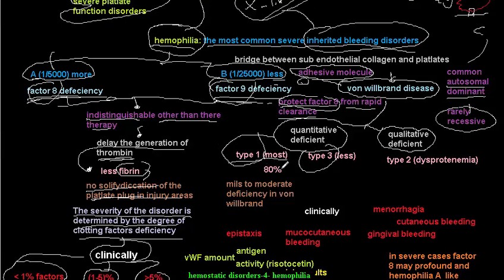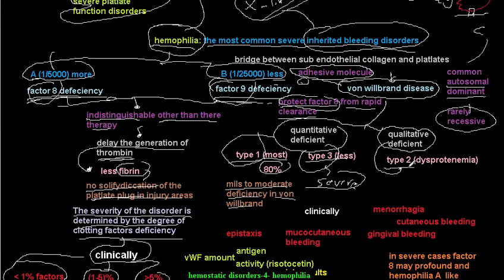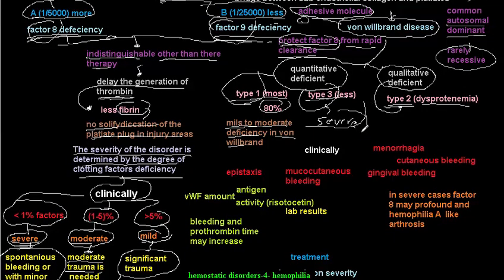Type 1 is the most common type of von Willebrand deficiency — we have mild to moderate deficiency in von Willebrand factors. In Type 3 we have a severe deficiency in the number of von Willebrand factors. Type 2 is the qualitative deficiency — it is a dysfunctional protein, meaning we have a problem in the shape of the von Willebrand factor. So Type 1 and Type 3 are about number; Type 2 is about function.